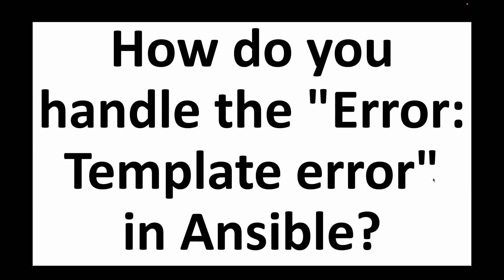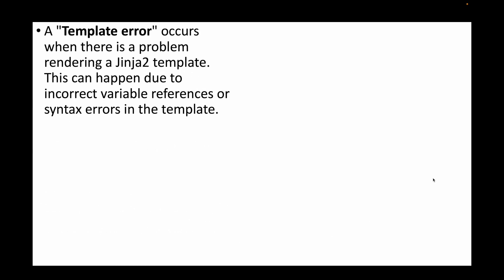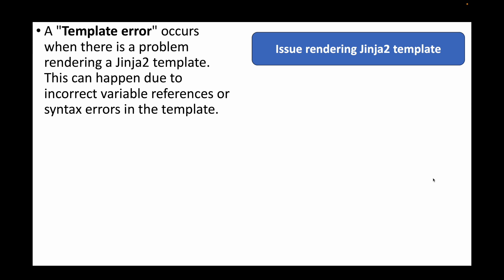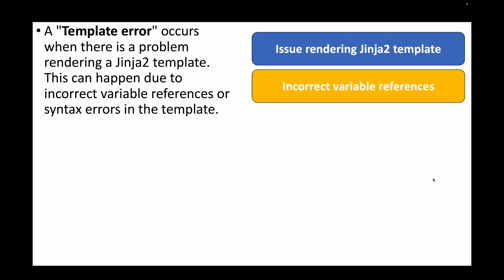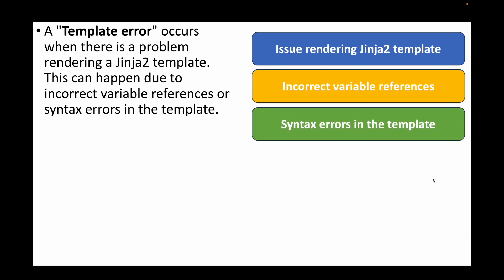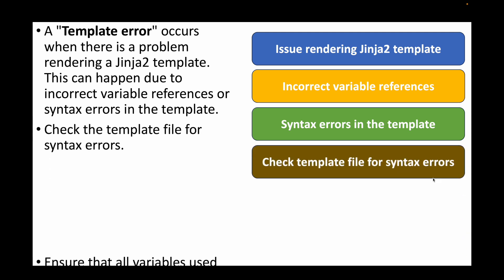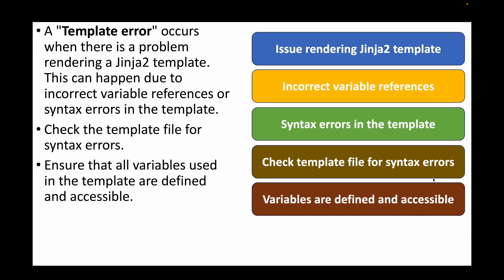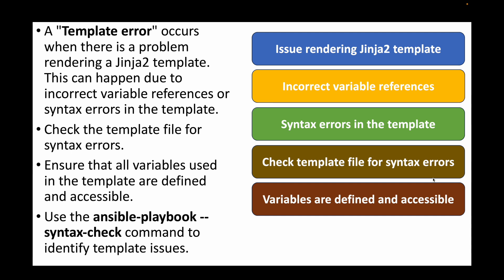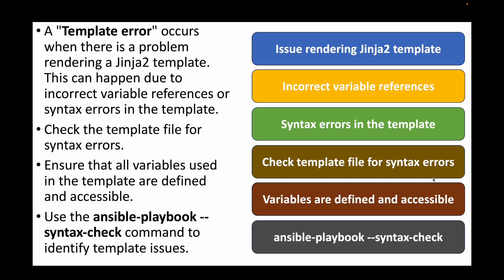The next question is: how do you handle the error 'template error' in Ansible? This error occurs when there is a problem with the Jinja2 template — some rendering problem. It can happen due to incorrect variable references or syntax errors in the template, such as typos in variable names, undeclared variables, or indentation/colon/dash issues. Check the template file for syntax errors, ensure all variables used in the template are defined and in scope, and use ansible-playbook --syntax-check to identify issues.